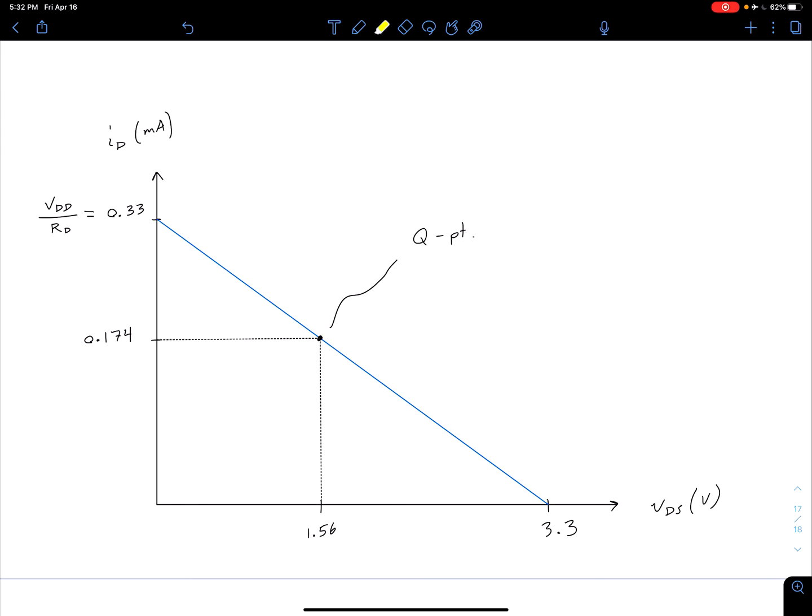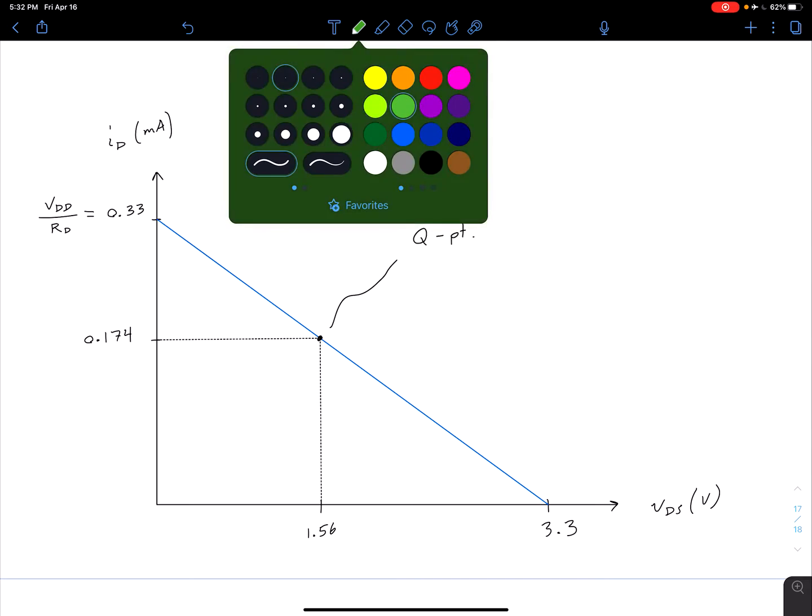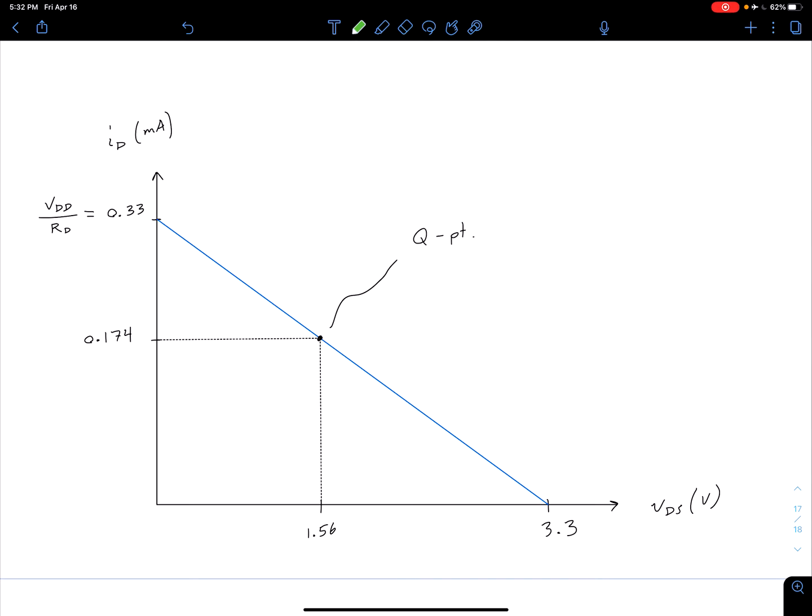So we can add a couple of things here of interest. So let's go ahead and add our VDS-SAT curve. And so remember, our VDS-SAT curve is going to depend on our gate-to-source voltage, so it looks something like this. So this would be our VDS-SAT.